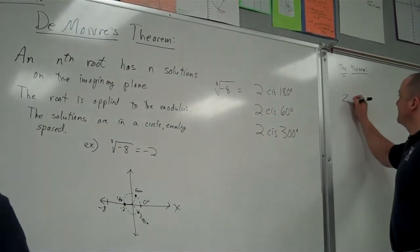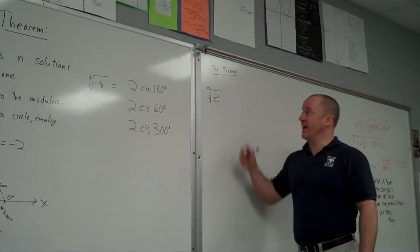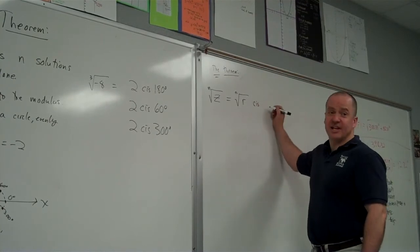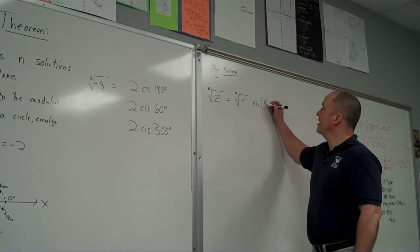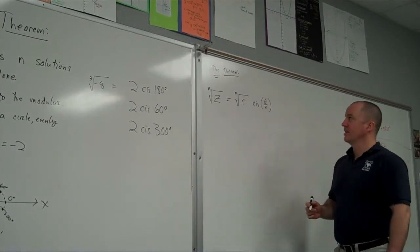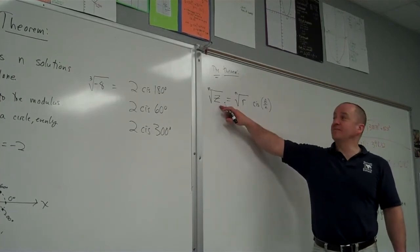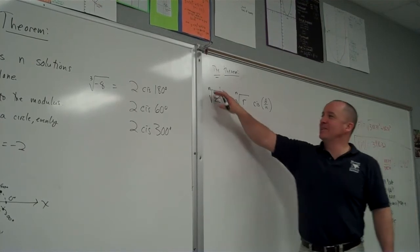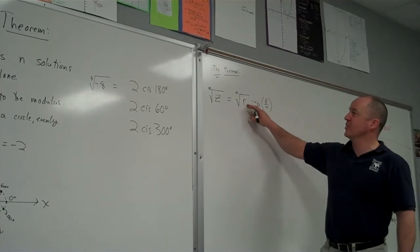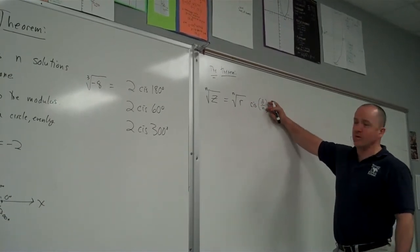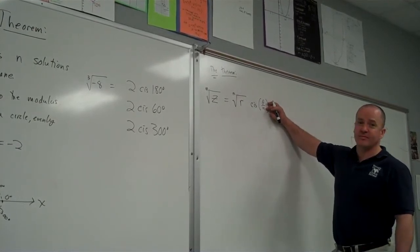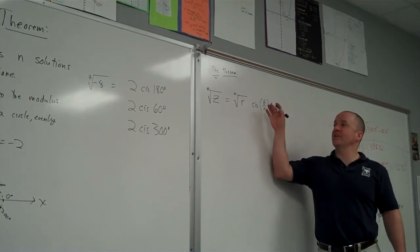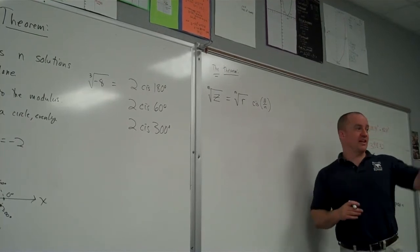There is a formula: the nth root of z is the nth root of the radius times cis of theta divided by n. I'm taking the nth root of the complex number in polar form, which I'm calling z. I take the nth root of the modulus — that's the distance from the origin — and I divide the angle by n. It's the exact inverse of exponents, where we multiplied n times theta.